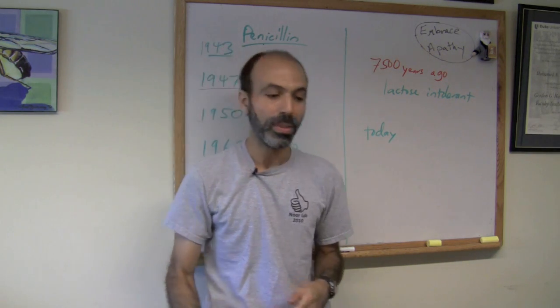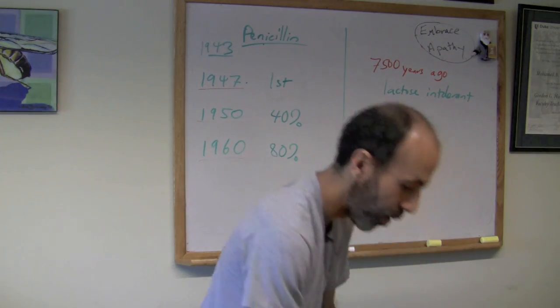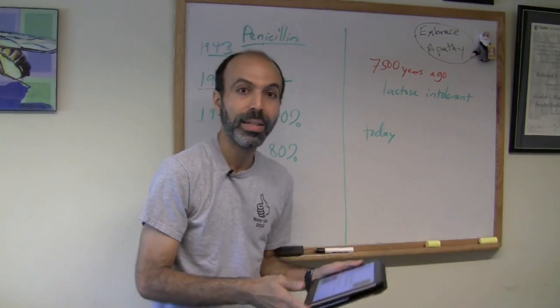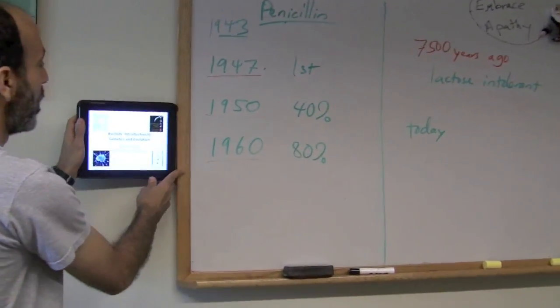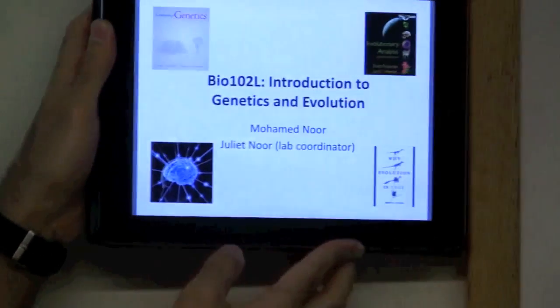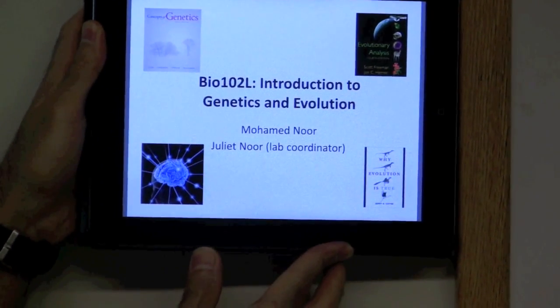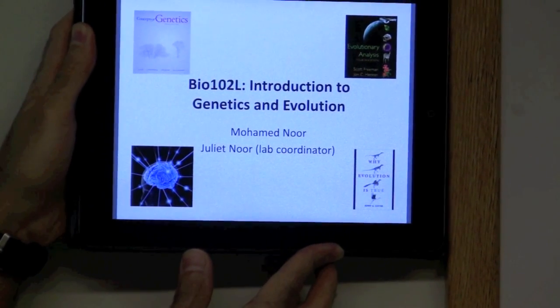And that happened in humans. If you want to learn more about evolution by natural selection and genetics, come to Biology 102, Introduction to Genetics and Evolution. See how these two things are facts and are tied together.